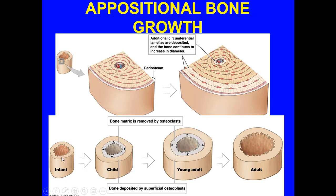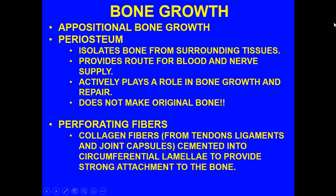You can see the stages from infant, child, young adult, to adult. As bone is deposited on the outside and bone matrix is being removed by osteoclasts on the inside, expansion occurs outward on the outer edge — the bone gets bigger, but so does the medullary cavity. As an end result when we get to adulthood, we've got this larger medullary cavity and a lot of osteo material in the form of compact bone. Additional circumferential lamellae continue to be deposited as the bone increases in diameter, with the periosteum helping to supply some of the cells.